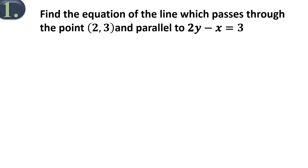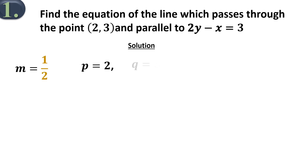Question 1: Find the equation of the line which passes through the point (2, 3) and parallel to 2y minus x equals 3. The solution. From the question, the gradient m equals 1 over 2, the x-coordinate p equals 2, and the y-coordinate q equals 3.